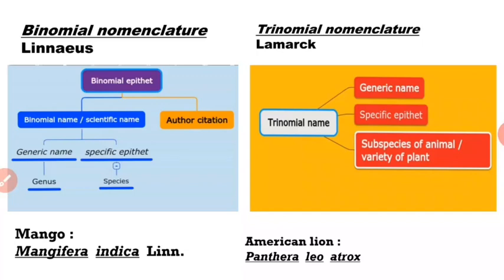For example, the binomial epithet of mango is Mangifera indica Lin. Mangifera indica is the binomial name or scientific name of mango. Lin is the author citation — the initials of the author who gave this name. So Mangifera is the generic name, indica is the specific epithet, Mangifera indica is the binomial or scientific name, and Mangifera indica Lin is the binomial epithet.